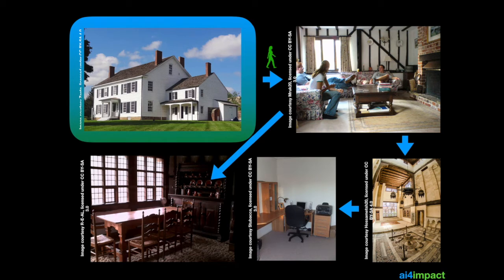In this scenario a person can walk through the front door and into the dining area, but they need a key to enter the first room and a second key to enter the second room. Notice that to enter the second room you need both keys.